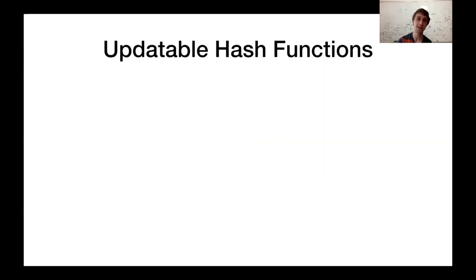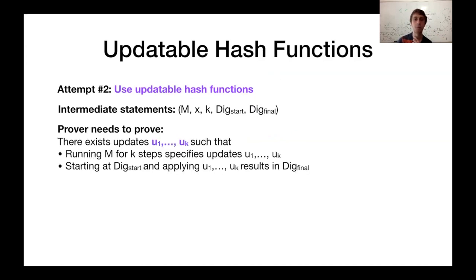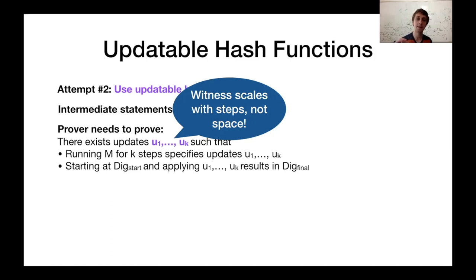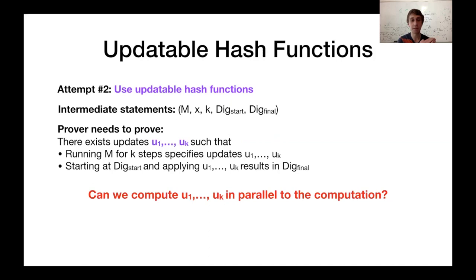What we'll use here is updatable hash functions. With updatable hash functions, we can have the exact same statements, but the prover now proves a different relation to convince the verifier. Specifically, it proves there exists some sequence of updates such that the machine specifies these k updates for these k steps, and starting with this initial digest, applying the updates results in this final digest. The key observation is that now the witness the prover needs to compute for each sub-protocol scales only with the number of steps and not with the space of the computation, so there's some hope of efficiently computing these in parallel.